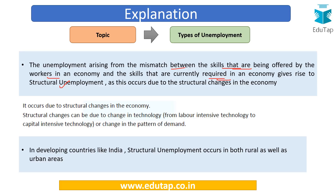For example, if automation is coming up in a manufacturing sector and workers are not aware of how to use those techniques, or robots are being introduced and people don't know how to operate them, it will cause unemployment because those who already have that skill would be preferred. This leads to job losses for existing workers. Structural unemployment is particularly important for developing countries like India and it occurs in both rural and urban areas.